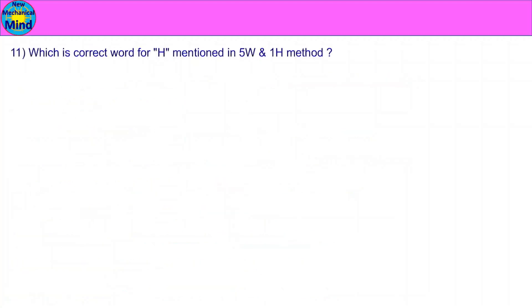Which is the correct word for 'H' mentioned in the 5W and 1H method? In the 5W and 1H method, 'H' stands for How.